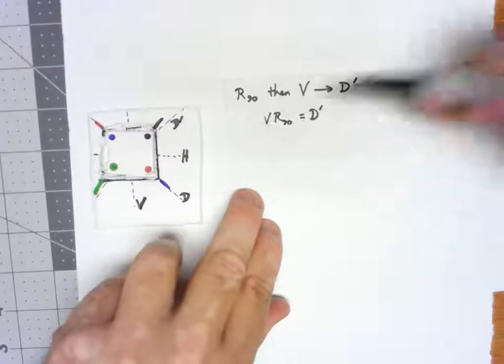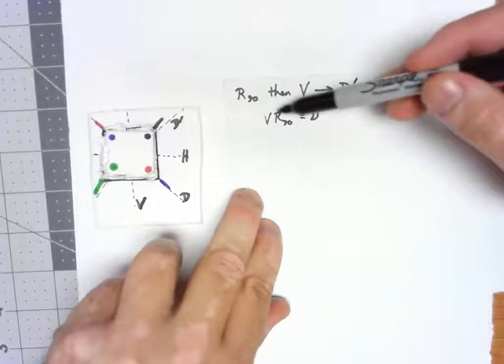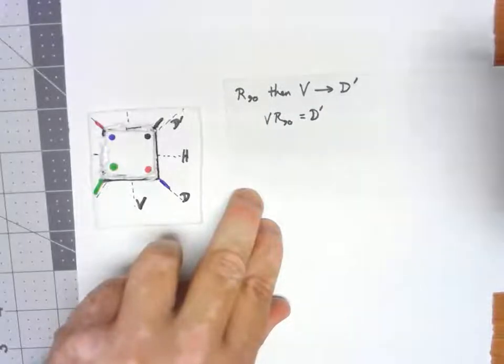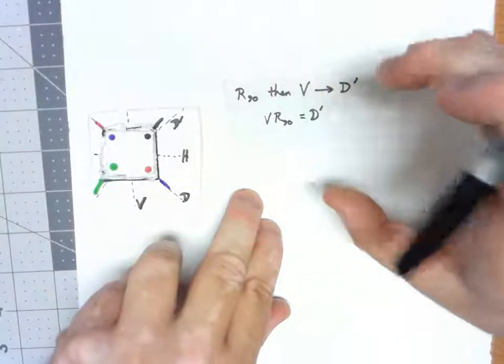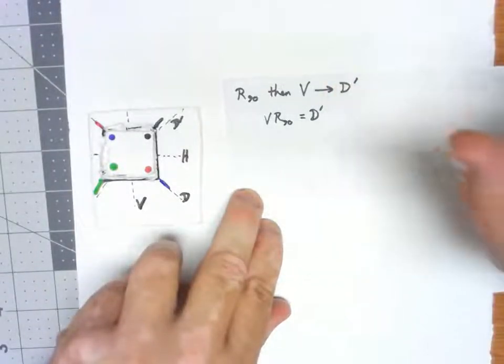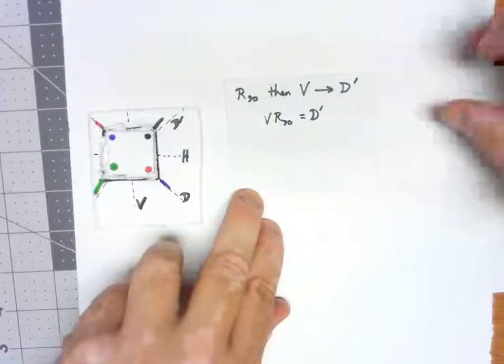At first glance that seems backwards. If we're doing the rotation by 90 first, why do we put it second in this order? The thing to realize is that all of these different operations we're doing, all these different ways we're placing the square back down, are really functions.